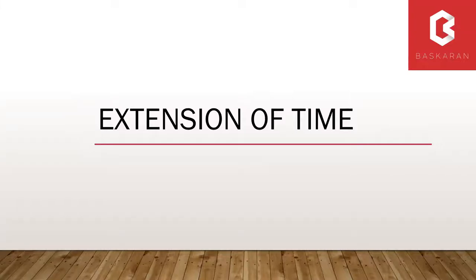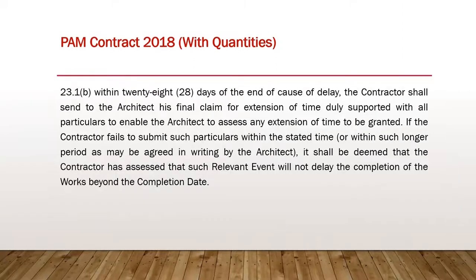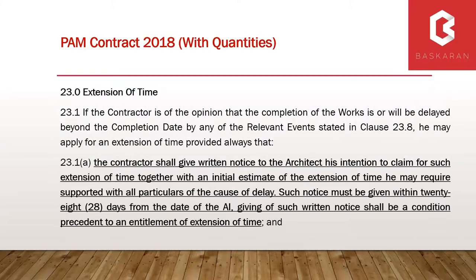Moving on to extension of time. The PAM contract has the usual standard extension of time clause, with very express provisions regarding notice. There are two notices required under the PAM form of contract: the initial notice under Clause 23.1A, issued within 28 days after the event of delay, which gives an estimate of the extension of time required; and then a further notice containing the final claim for extension of time. Both provisions expressly state that they are conditions precedent to any entitlement to extension of time.